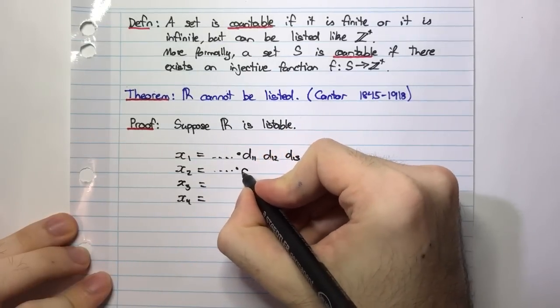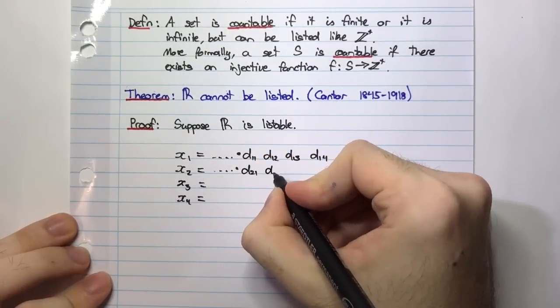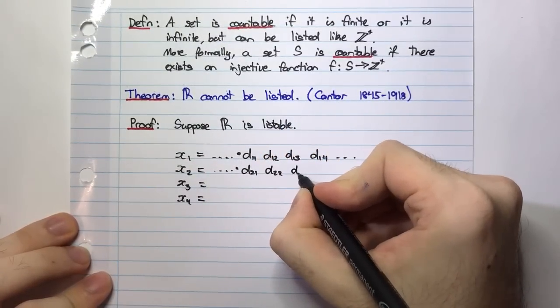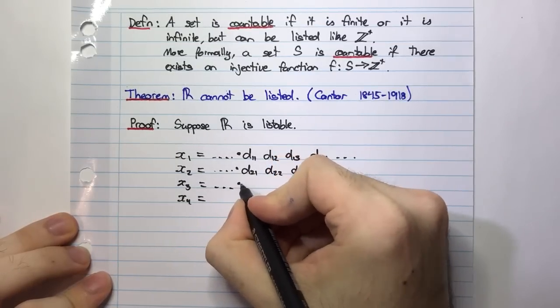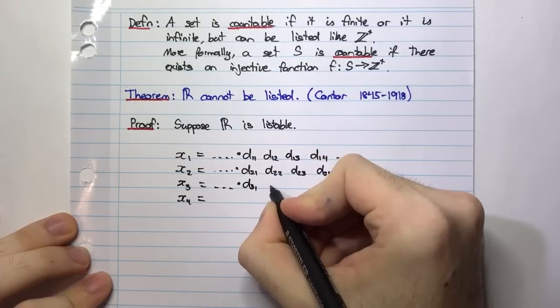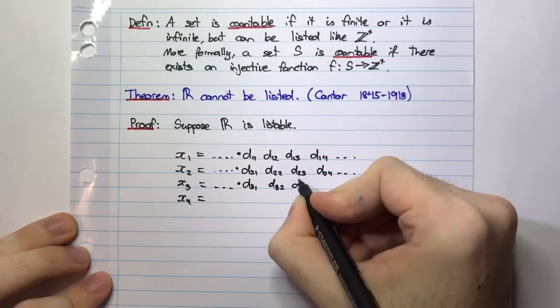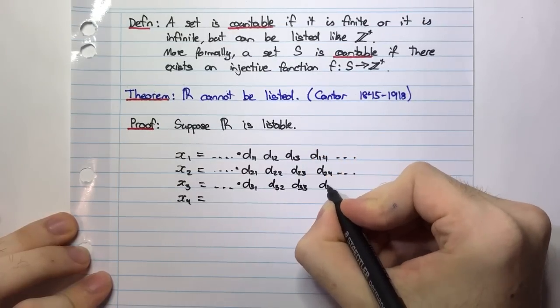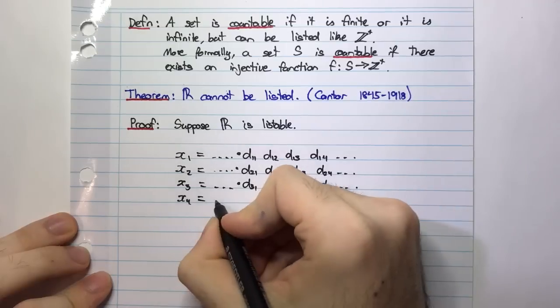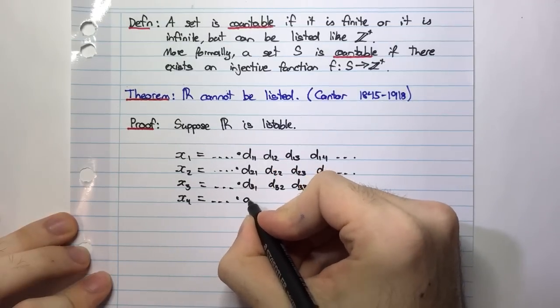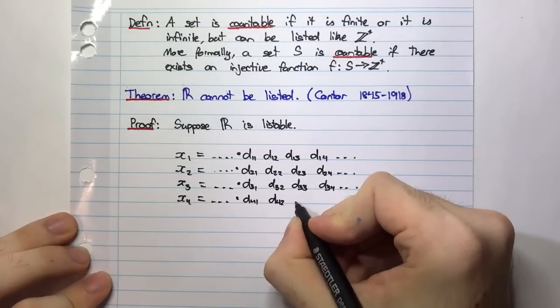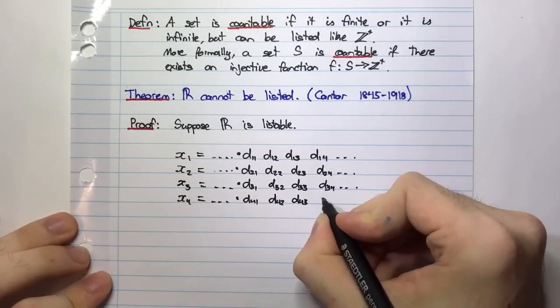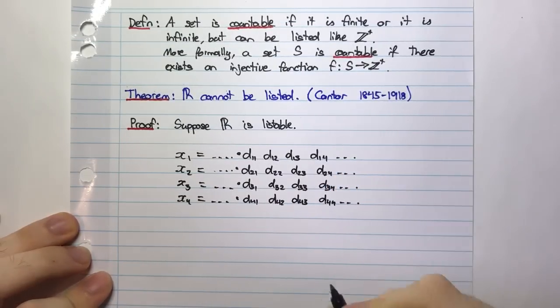And so I'm going to write out a few of these. D23, D24, etc. I have D31, D32, D33, D34, and this should be enough now, D41, D42, D43, D44. And this continues on forever, obviously.